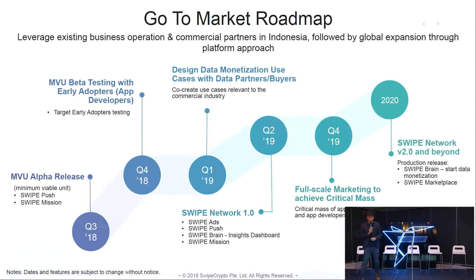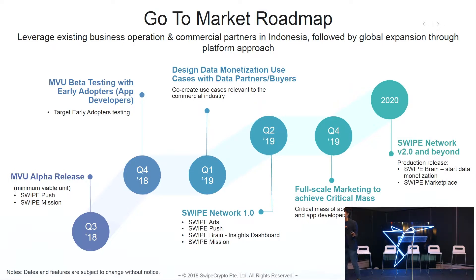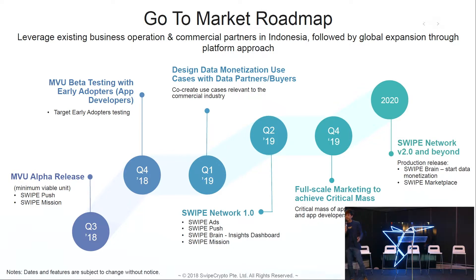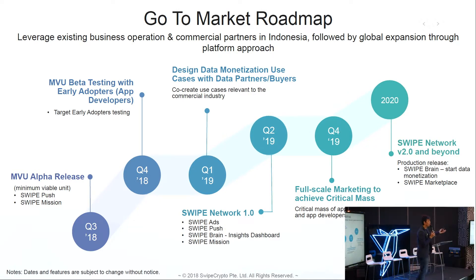Let me introduce our go-to-market strategy. In Q3, which is now — last month — we just finished our MVP, which is a demo app. You can go on Google Play Store and download it right now. This is a demo app to showcase our capability with our SDK. In Q4 2018, we'll work with early adopters for testing, to make sure we have use cases back in Q1 2019. We want to co-create commercialized use cases for the commercial industry, and moving forward will be mass market adoption.